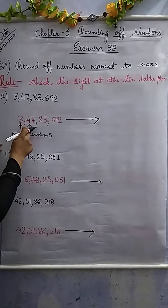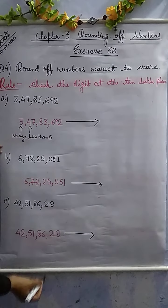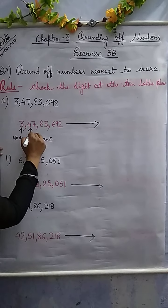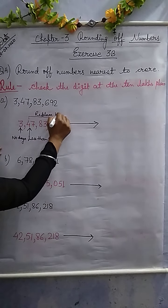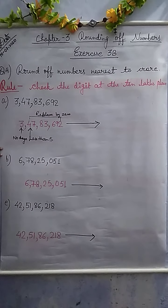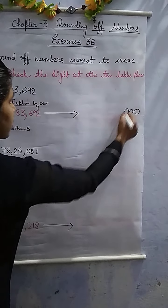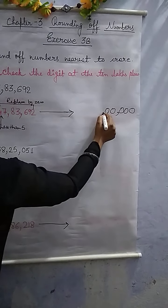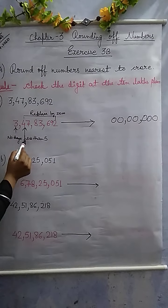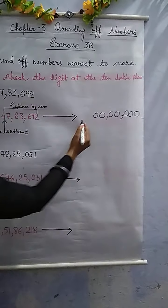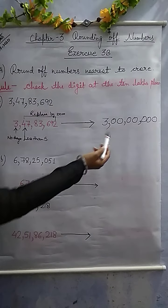And from the ones place up to the place that we checked, replace by 0. Once place to the place we checked — that is replaced by 0. So student, from the digit 2 up to digit 4, that is replaced by 0. Here there is no change, so 3 remains the same. That means 3 crore is the round off of this number.